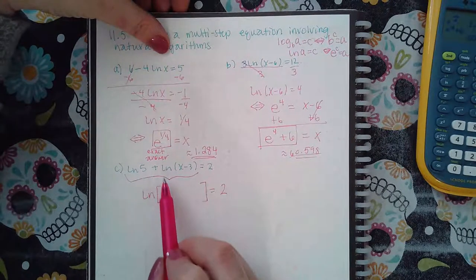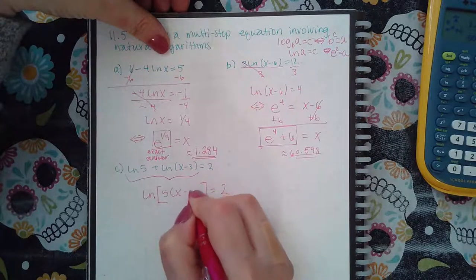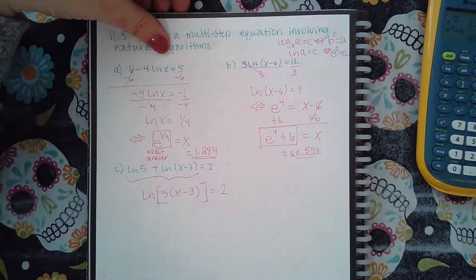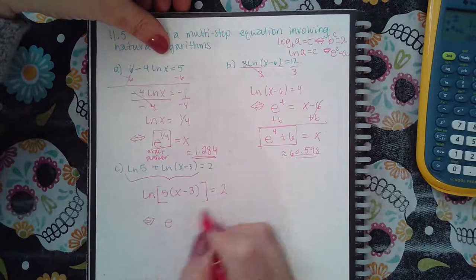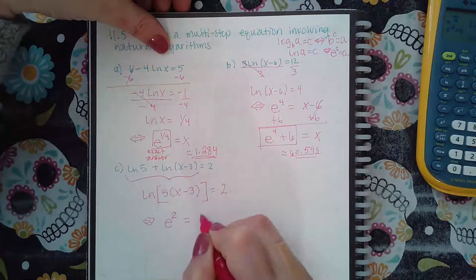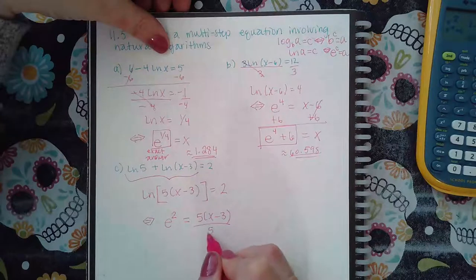And so the property I'm going to use is when it's addition you take one argument and multiply it by the other argument. So then now when I switch the forms over, this becomes e raised to the two exponent equal to this argument, and then I would divide by five.